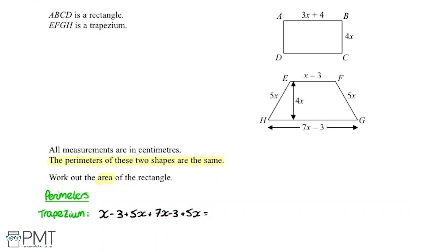Anywhere where we see an x we can collect them all together. Anywhere where we see a constant, so without an x, we can bring them together as well. Starting with the x's we've got 1x plus 5x plus 7x plus 5x. Adding that up gives us 18x. And then for the constants we've got minus 3 minus 3, so that's going to be minus 6.